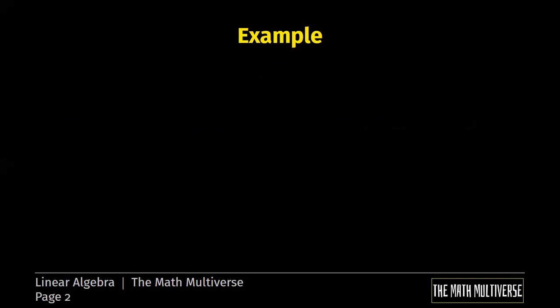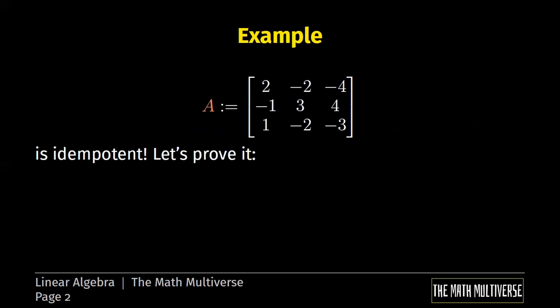So now I'd like to give you an example of an idempotent matrix. I chose an example of a 3x3 matrix. In order to show that A is idempotent, we simply need to multiply A with itself and show that the result is still A.